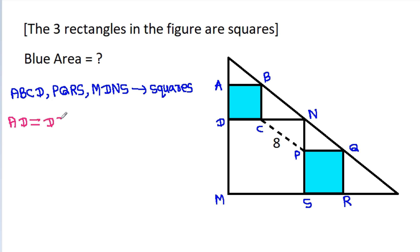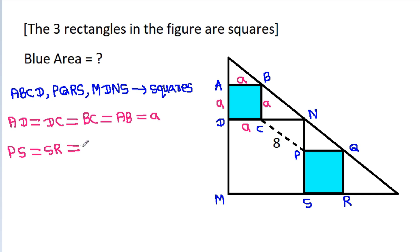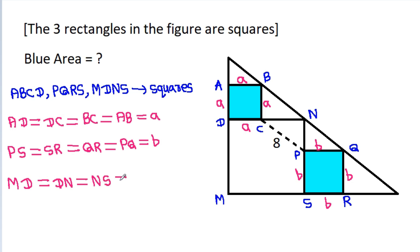So AD will be equal to DC, it will be equal to BC, and it will be equal to AB. Suppose AD is a, DC is a, BC is a, and AB is a. And PS will be equal to SR, it will be equal to QR, and it will be equal to PQ. Suppose PS is b, SR is b, QR is b, and PQ is b. And also MD will be equal to DN, will be equal to NS, and it will be equal to SM.